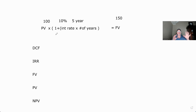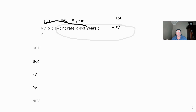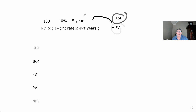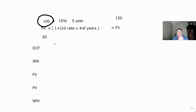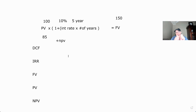To get present value you need future value, and to get future value you need present value. If you do the present value formula and come out with $100, and the market price is actually $85, the expected value is $100 but we can buy it for $85 — that's a positive NPV and it's totally worth investing in, because we're going to earn more than our rate of return.